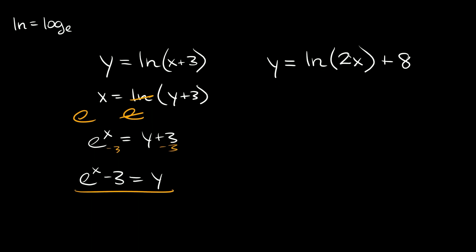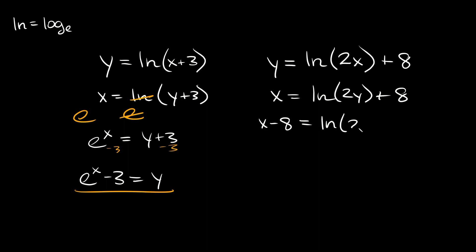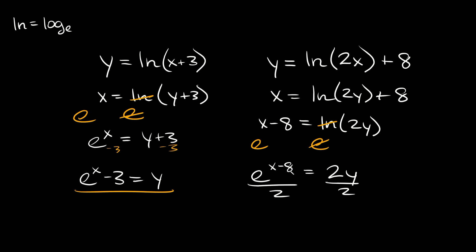Now we have y is equal to the natural log of 2x plus 8. We rewrite this as x is equal to the natural log of 2y plus 8. First get rid of the positive 8, so x minus 8 is equal to the natural log of 2y. To get rid of this natural log, we say e raised to x minus 8 is equal to e raised to the natural log of 2y. These cancel out, leaving e raised to the x minus 8 is equal to 2y. Divide both sides by 2: y is equal to e raised to the x minus 8, over 2.